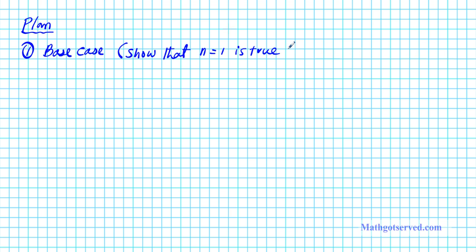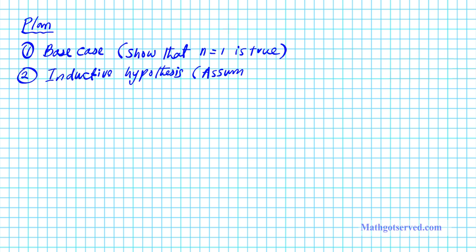The second part of the proof by induction is the inductive hypothesis. For the inductive hypothesis, you just basically assume that n equals k is true for some k in the set of positive integers.